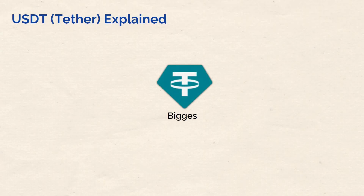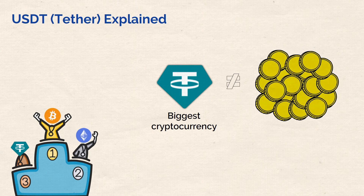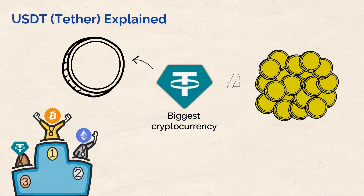USDT Tether is the biggest cryptocurrency of its kind. It is also the third biggest cryptocurrency by market cap overall, just behind Bitcoin and Ethereum. But USDT is quite different from these coins because it functions for an entirely separate purpose as something called a stablecoin.